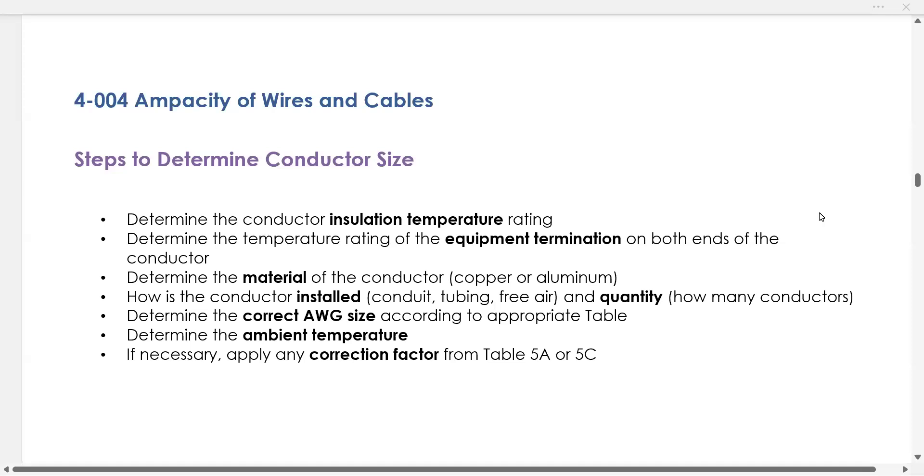So that's all you're doing. You can make a little flow chart of this. You find your insulation temperature rating based on the insulation you want to use. First, you calculate, you make sure that you know the temperature rating of both sides of that cable, of that conductor by knowing your equipment.